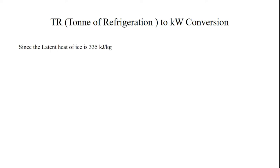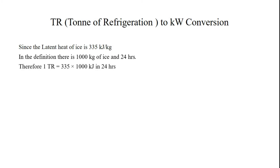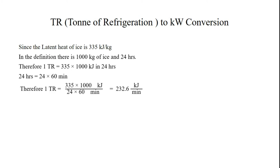Now let's see the conversion of TR to kilowatt. Since the latent heat of ice is 335 kJ/kg — latent heat being the amount of heat required to cause a phase change — and the definition involves 1000 kg of ice over 24 hours, 1 TR equals 335 × 1000 kJ in 24 hours. Since 24 hours equals 24 × 60 minutes, 1 TR equals 335 × 1000 divided by (24 × 60), giving units of kJ per minute.